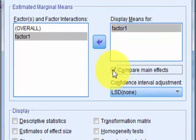Compare main effects. That's going to give you a post hoc test. So this one is, I believe, the Fisher's least significant difference test. We always use what SPSS suggests.